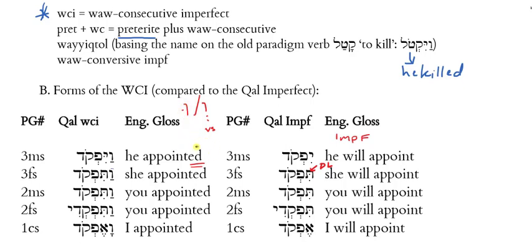There are also times when the vav becomes a shurek — when the vav comes before one of the bump letters. The bump letters bet, mem, and pay are formed with the lips; they're labials, and whenever the vav comes before those it becomes an 'oo' sound. My point here is that what we have on these WCI or vayiktol forms is a vav with a patah underneath and then a doubling dot in the prefix consonant — that is not like any of the vavs we've seen before. This special pointing should jump out at us whenever we see it in a WCI form.